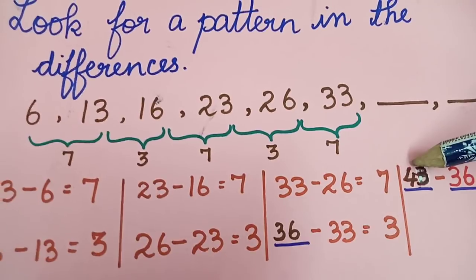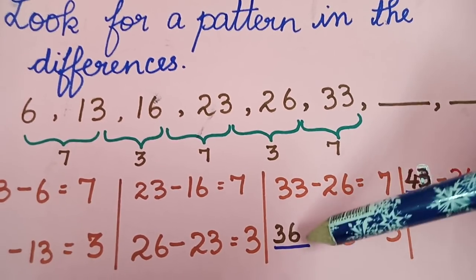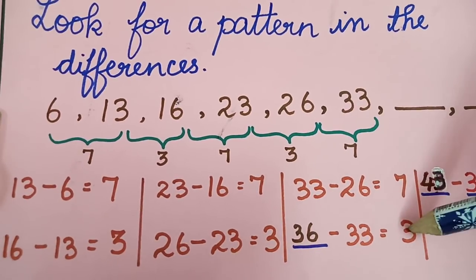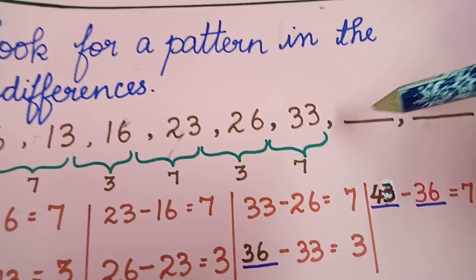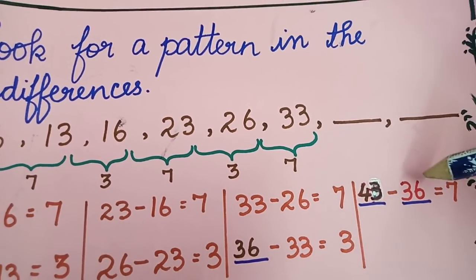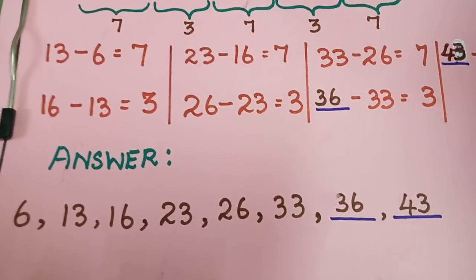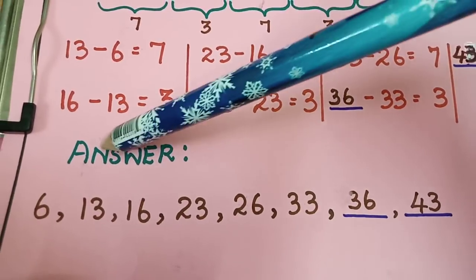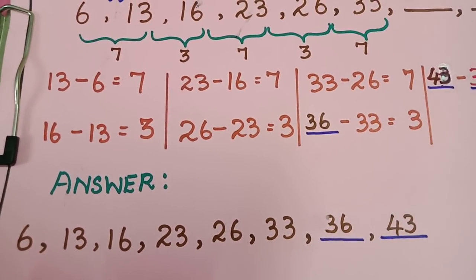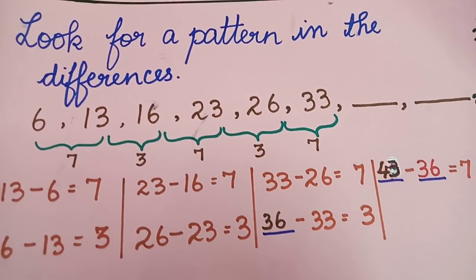Likewise, we have to find what will be the number so that we have a difference of 3, and we found out the number is 36, so that 36 minus 33 gives you a difference of 3. Likewise, the next number should be of difference 7, so 43 minus 36 gives you a difference of 7. So our answer for the given question is 6, 13, 16, 23, 26, 33, 36, and 43. And this is the procedure we follow for these type of problems.